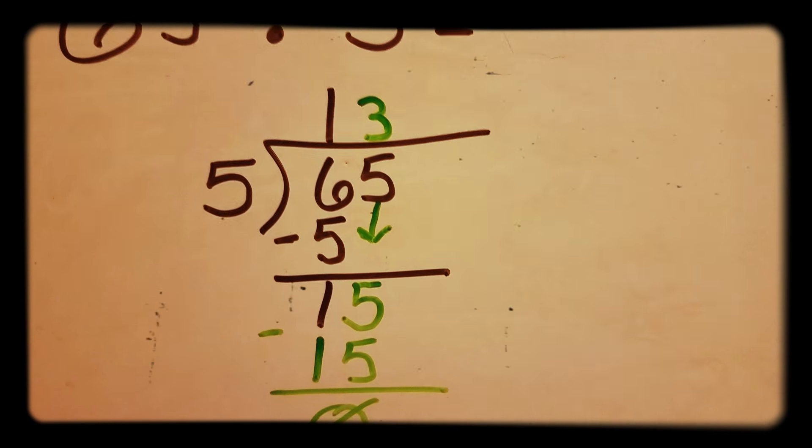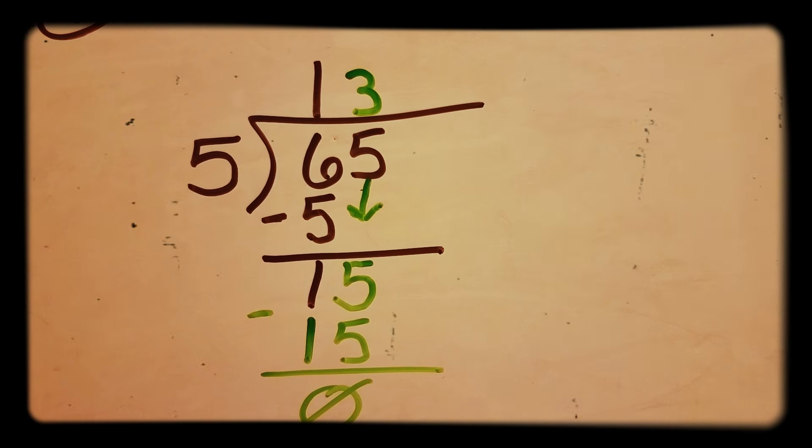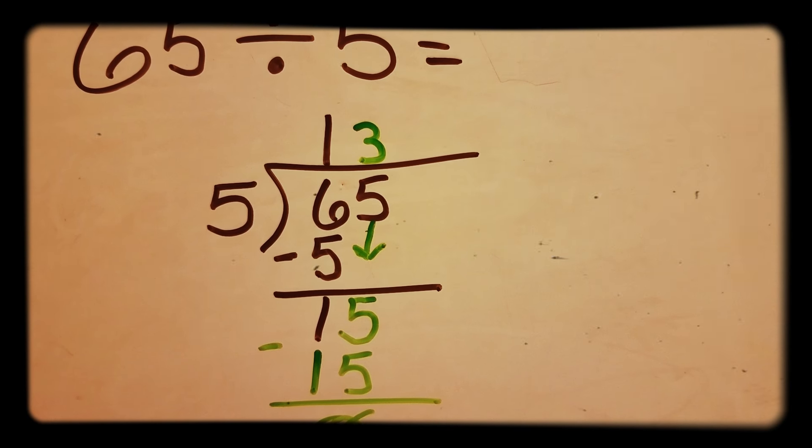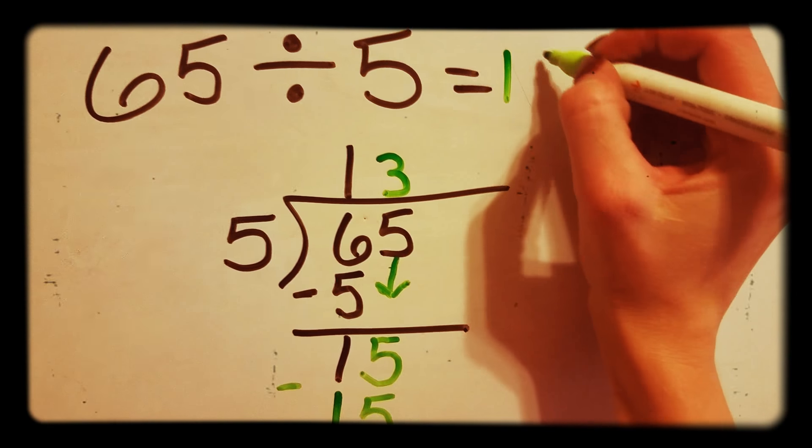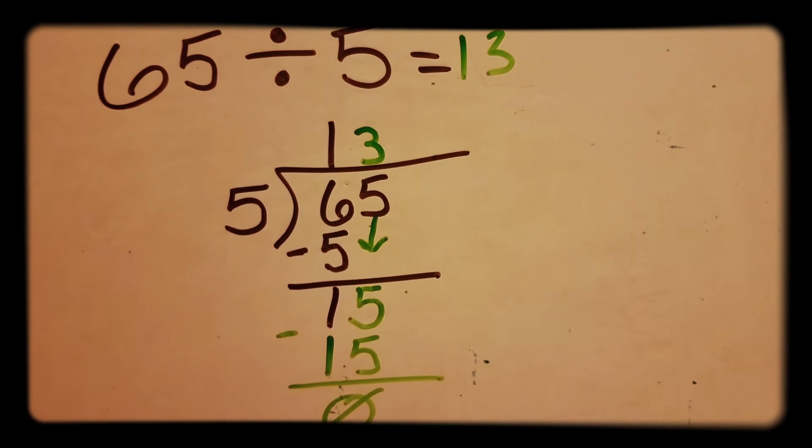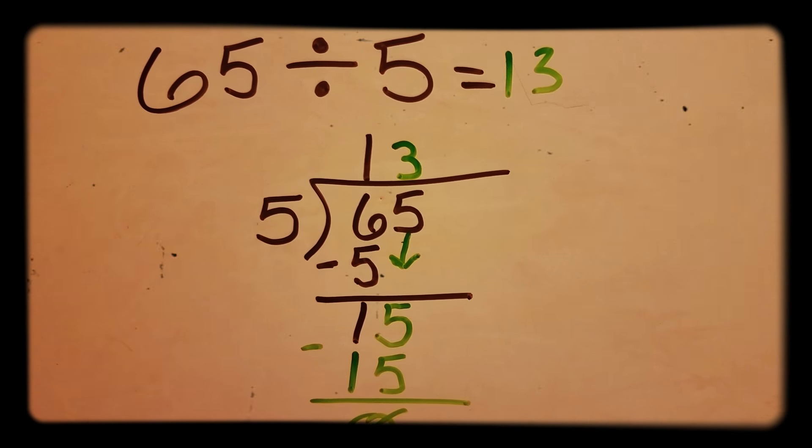And once you get to 0, you're done. So 65 divided by 5 is 13. Simple as that.